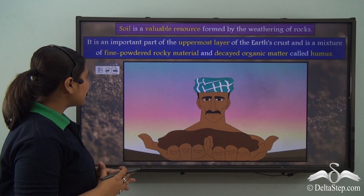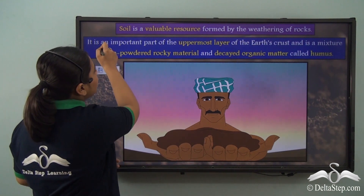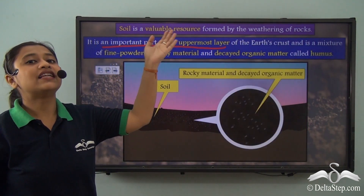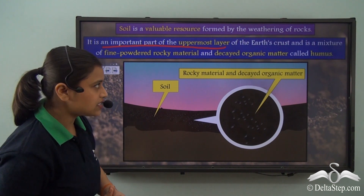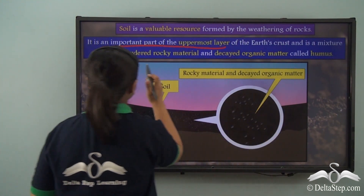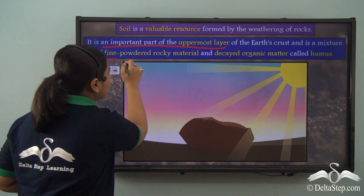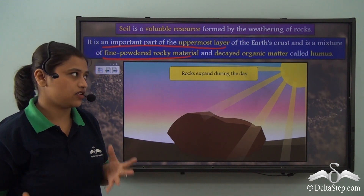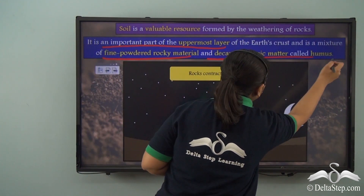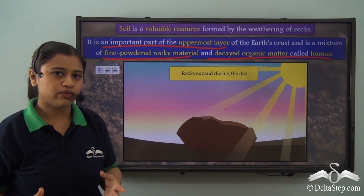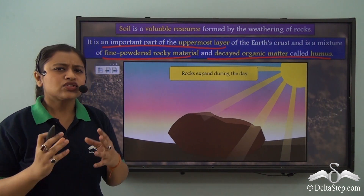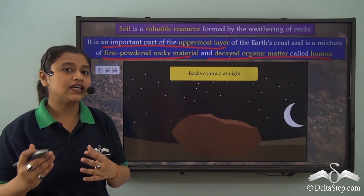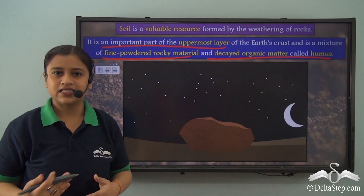Soil is an important part of the uppermost layer of the earth's crust. It is a mixture of fine powdered rocky material and decayed organic matter called humus. We will learn more about humus as we proceed.